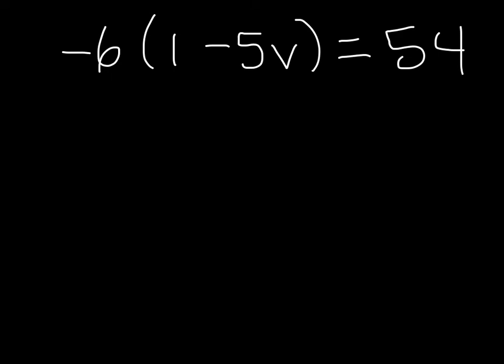So the first thing that we're going to do is distribute and combine like terms. So negative 6 times 1 is negative 6. Negative 6 times negative 5 is a positive 30v. And that has the same value as 54 positives.